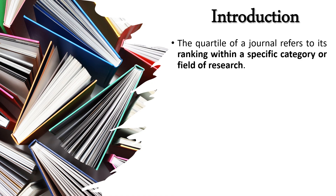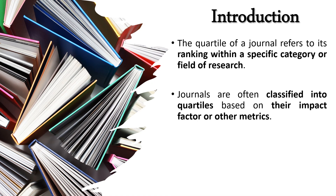When we use quartiles, not all journals are divided into four quarters across the board — it depends on the journal and what field it publishes in. So the ranking is within a specific area or field of research. Journals are classified into quartiles based on their impact factor or other metrics, meaning other parameters or characteristic features.